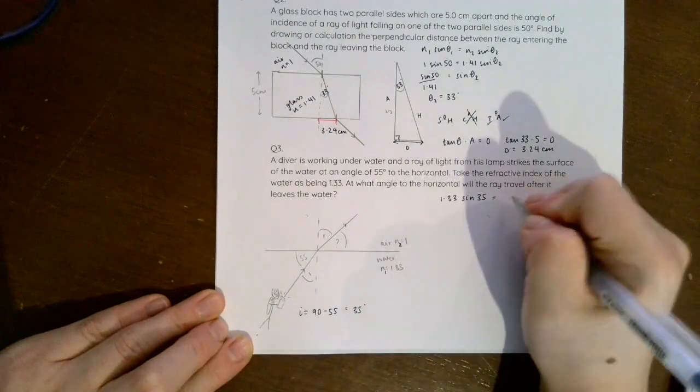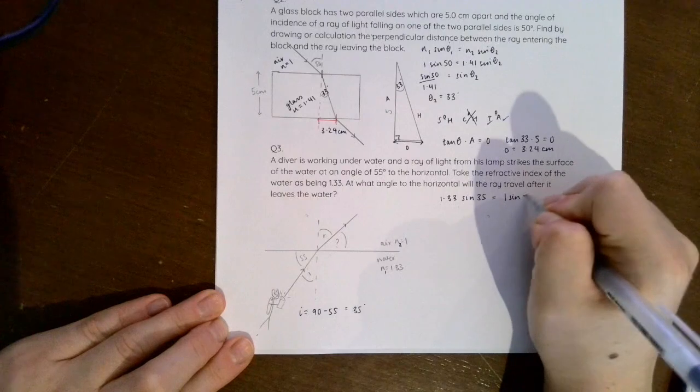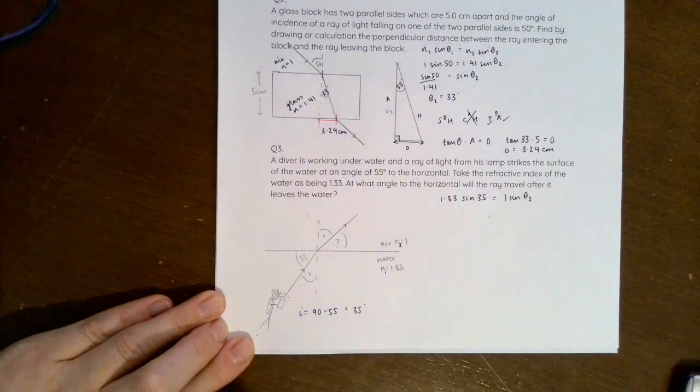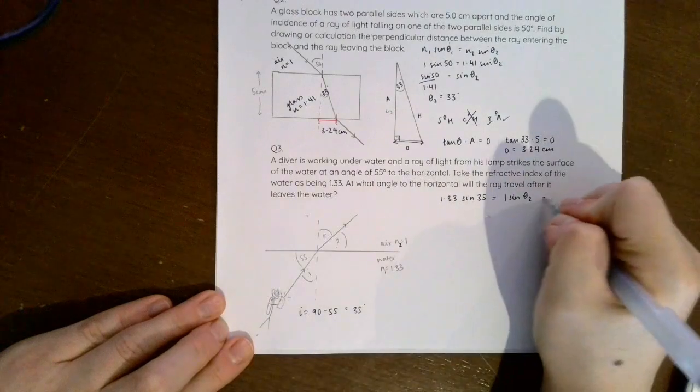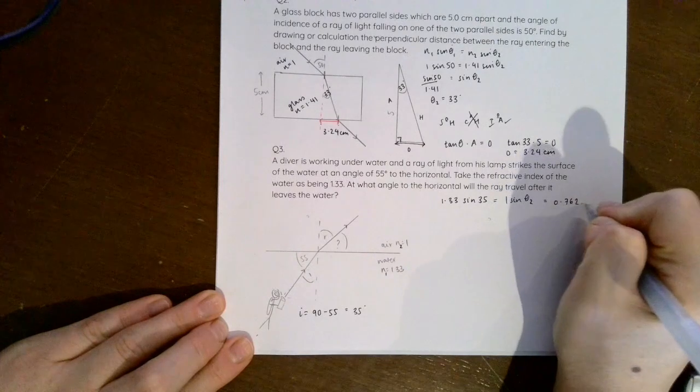So I can use the same equation as before and I can say 1.33 sin 35 for n₁ sin θ₁ must equal n₂, which is 1, sin θ₂, which is R. So I can calculate this and it works out to be 0.762.